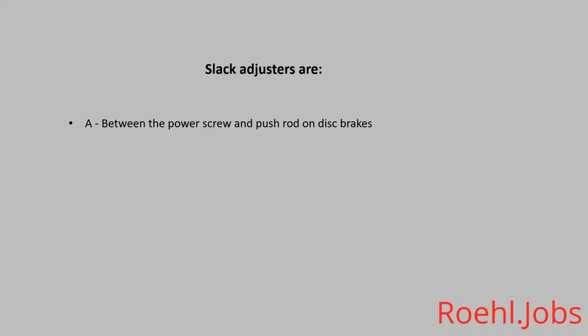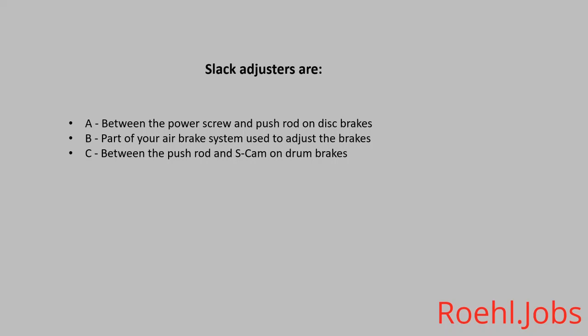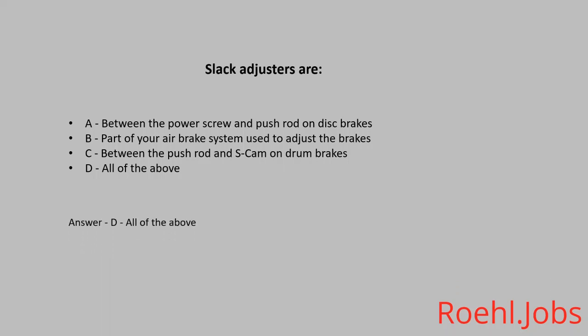Slack adjusters are: A. Between power screw and push rod on disc brakes. B. Part of your air brake system used to adjust the brakes. C. Between the push rod and S-cam on drum brakes. D. All of the above. The answer: D, all of the above.